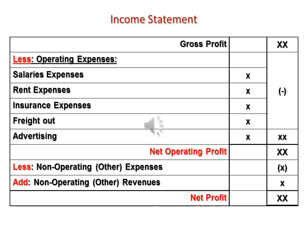Continuing the income statement: from gross profit, deduct operating expenses such as salary expenses, rent expenses, insurance expenses, freight out or transportation out expenses, and advertising expenses. Total operating expenses are subtracted from gross profit to arrive at net operating profit. Then list non-operating or other expenses, add non-operating or other revenues, to arrive at net profit.